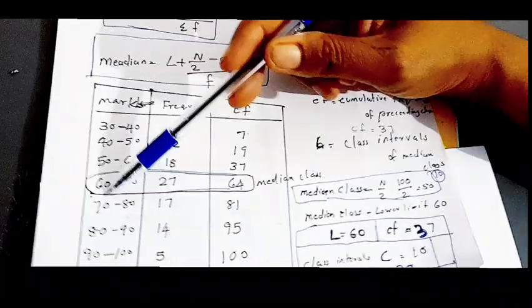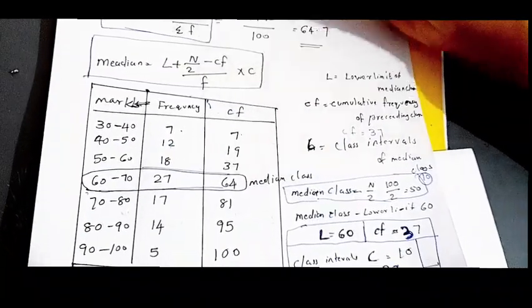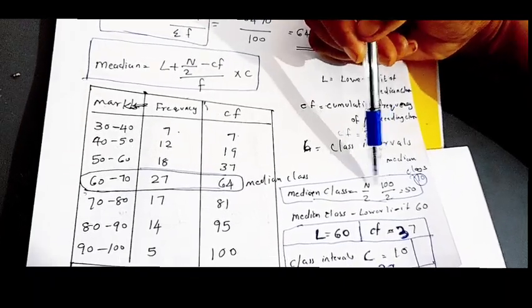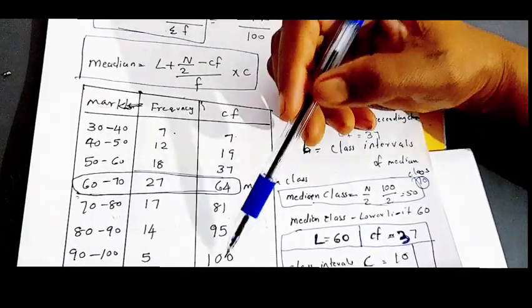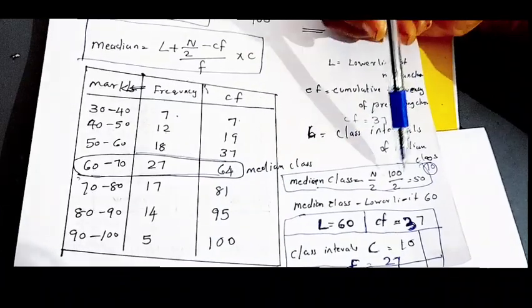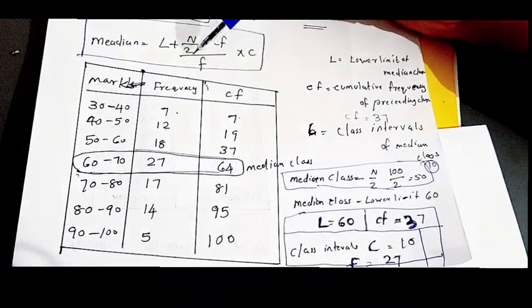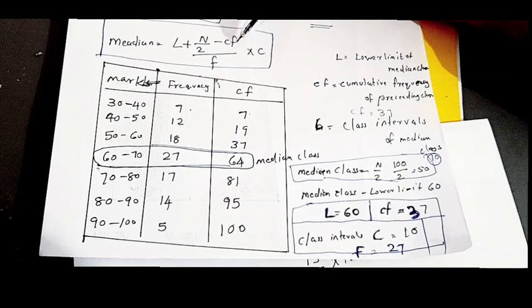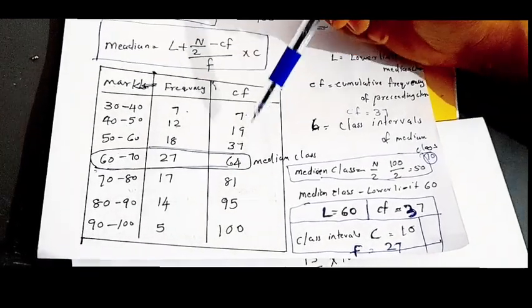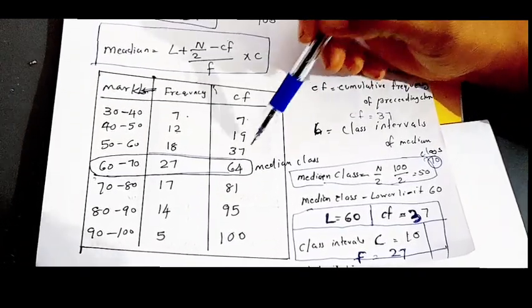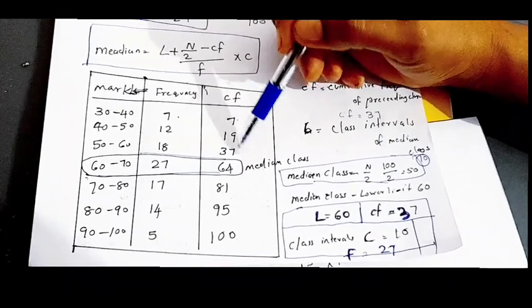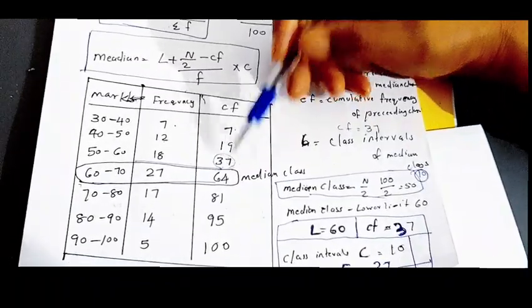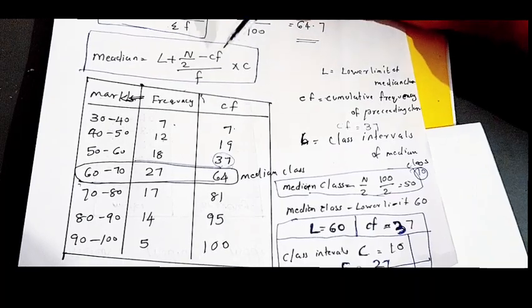L is 60. n by 2 is 80. The lower limit in the middle class is 60. If you have cf, it is 80. Then cf is 37.